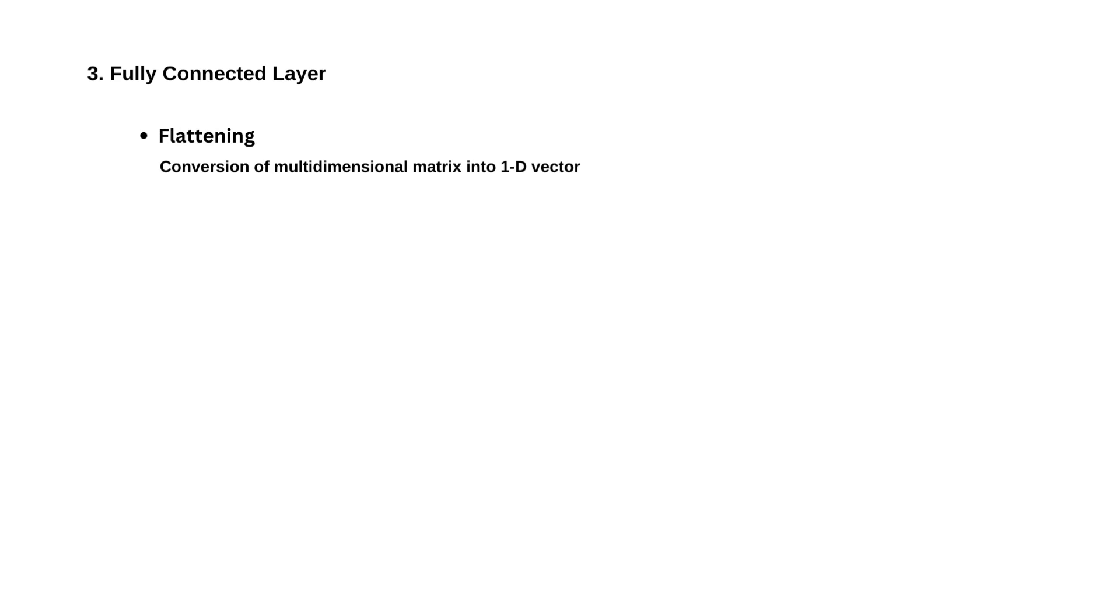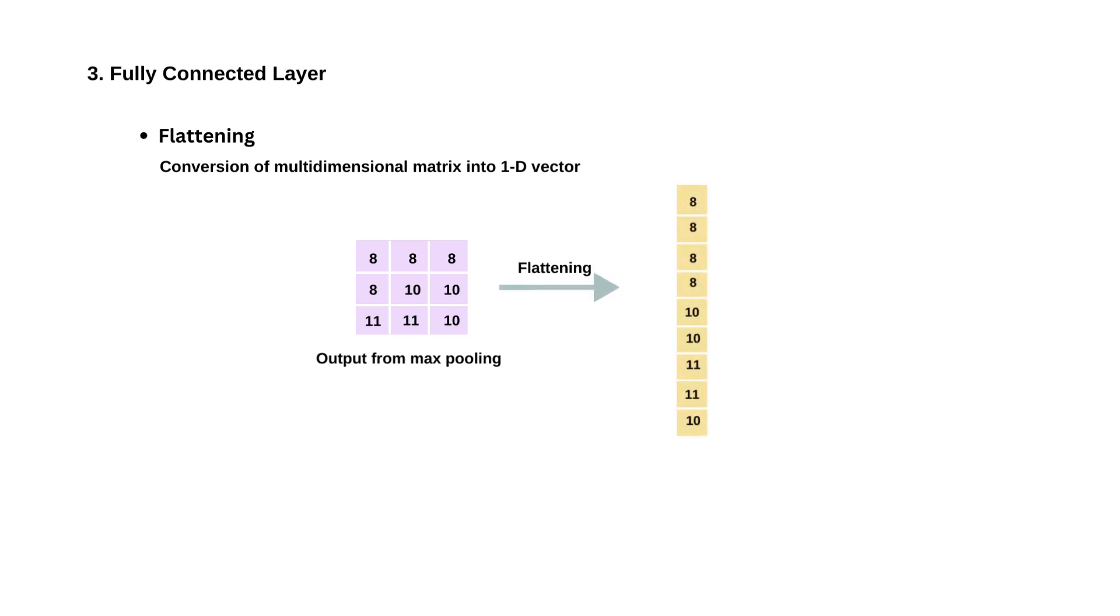Before passing data to a fully connected layer, the output from the preceding layers, which is often in the form of multidimensional arrays, is flattened into a one-dimensional vector. A 3x3 matrix from max pooling is now converted to a 1D vector. This reshaping process turns the spatial information from earlier layers into a format that fully connected layers can work with.